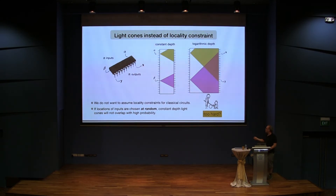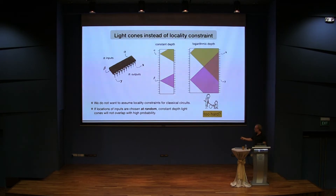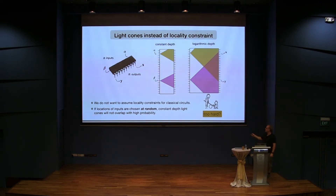It could be that the circuit is wired in such a way that the input beta immediately goes over to alpha, and then they can still solve this problem easily. To overcome this, what we need to do is choose these input locations randomly. If we choose the locations randomly, then still with the same argument, we can show that with high probability the light cones of the two inputs will not overlap — just because they are so small compared to the number of inputs.